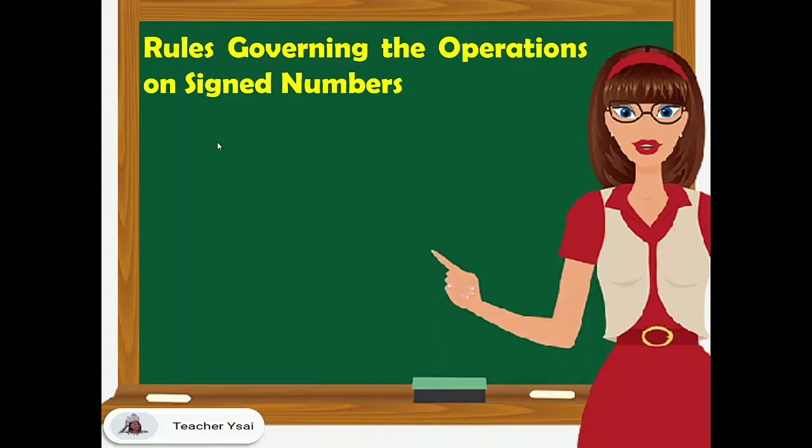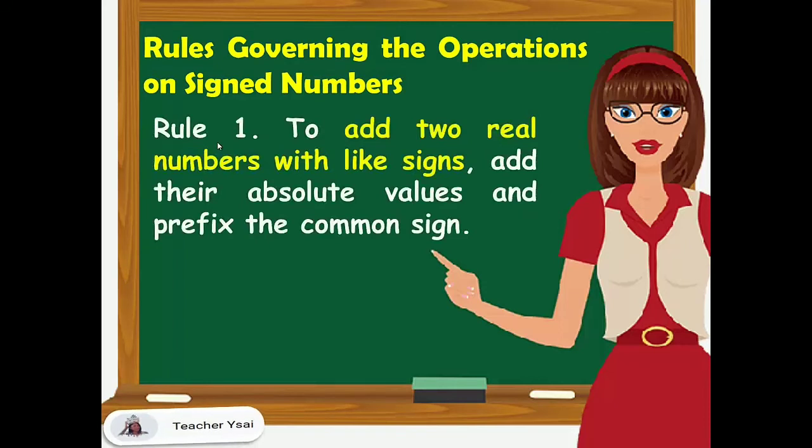Rules Governing the Operations on Signed Numbers. The operation on the set of real numbers is governed by the following rules. Rule number 1: to add two real numbers with like signs, add their absolute values and prefix the common sign.